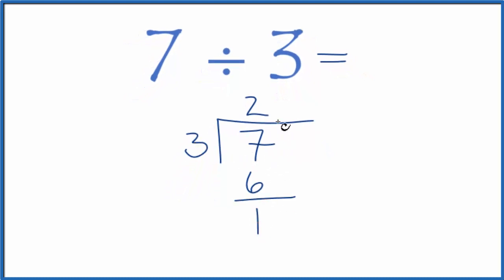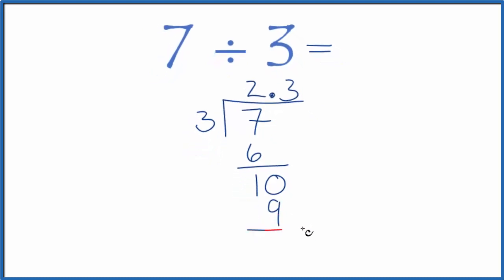So we'll put a decimal point up here and now we can put a zero. 3 goes into 10 three times. 3 times 3, that's 9, and that gives us 1 left over.